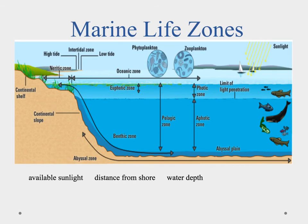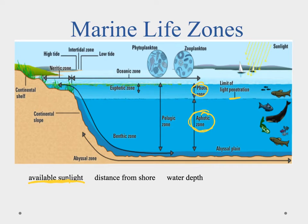Now let's divide the ocean into marine life zones using three different classifications. The first is available sunlight. We have two regions: the photic zone and the aphotic zone. The photic zone extends from the surface down as far as light can penetrate. Below that is the dark ocean — the aphotic zone — where no sunlight reaches and therefore no photosynthesis can occur.